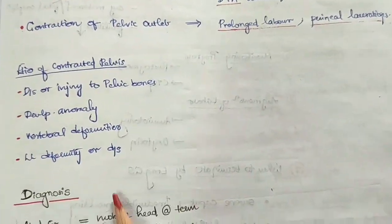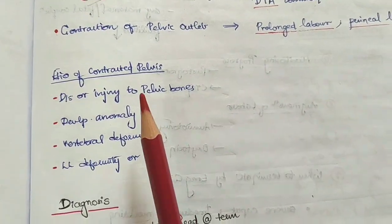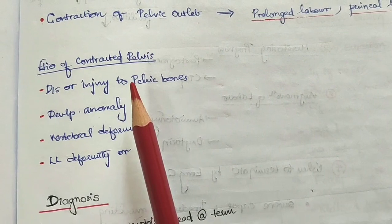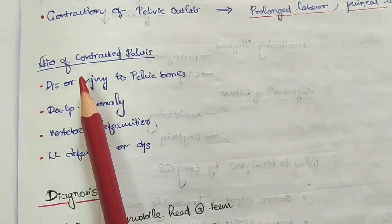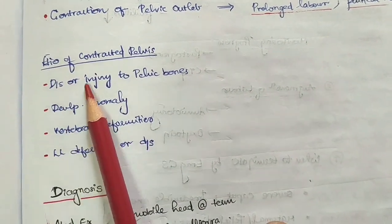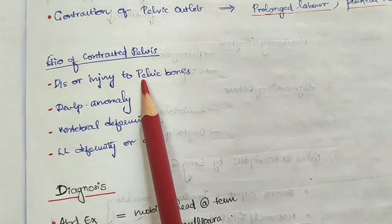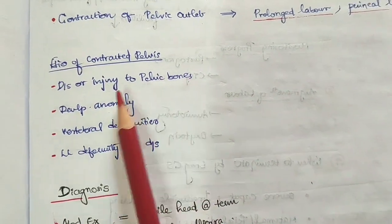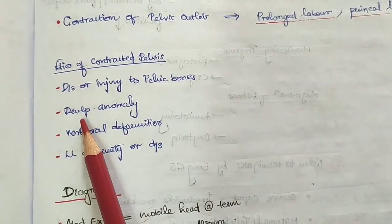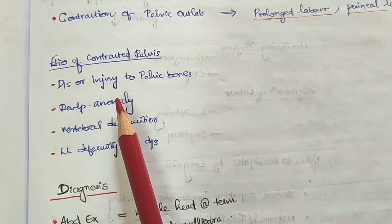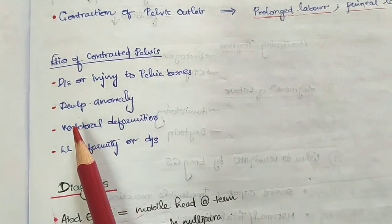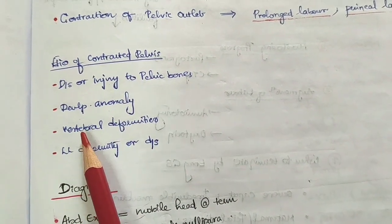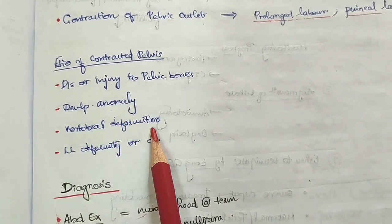The etiology of contracted pelvis includes disease or injury to the pelvic bones, developmental anomalies, and vertebral deformities.